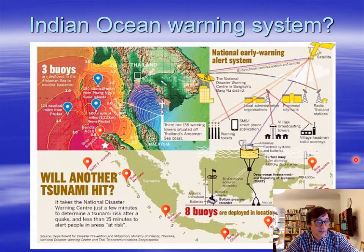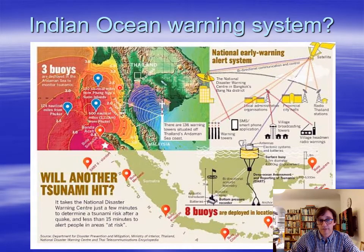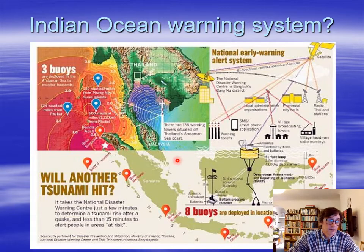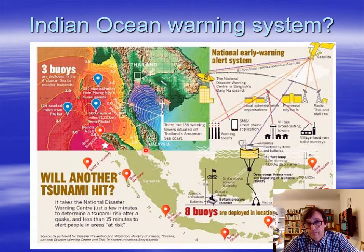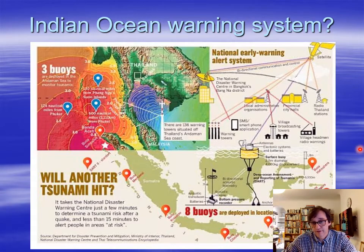The Indian Ocean Warning System took a few years to get deployed — around about six or seven years afterwards it was finally up. It shows eight buoys in Indonesia, another three buoys in the Andaman Sea west of Thailand. Also mentioned are 136 warning towers situated off Thailand's Andaman Sea coast — literally people like coastguards watching for incoming waves and very quickly telling people to get to safe locations. So this will save lives. All these coastal towns now have sirens to tell people — and public education tells people that if the sirens go off, evacuate to predetermined safe places, generally higher elevations.